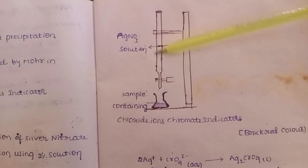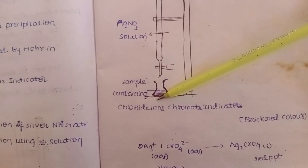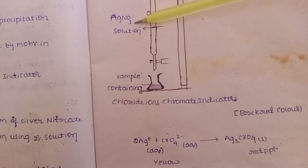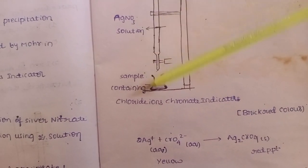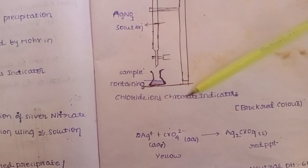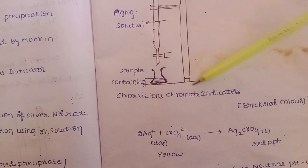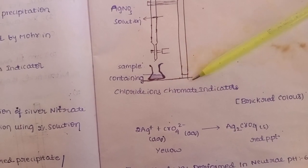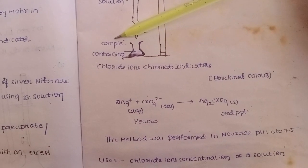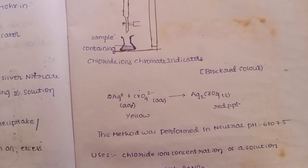Here we have AgNO3 in the burette and a conical flask containing the sample with chloride ions and chromate indicator. The chloride ions react with silver nitrate to form a white precipitation, and the remaining excess silver nitrate reacts with the chromate indicator to give a brick red color change indicating the endpoint.